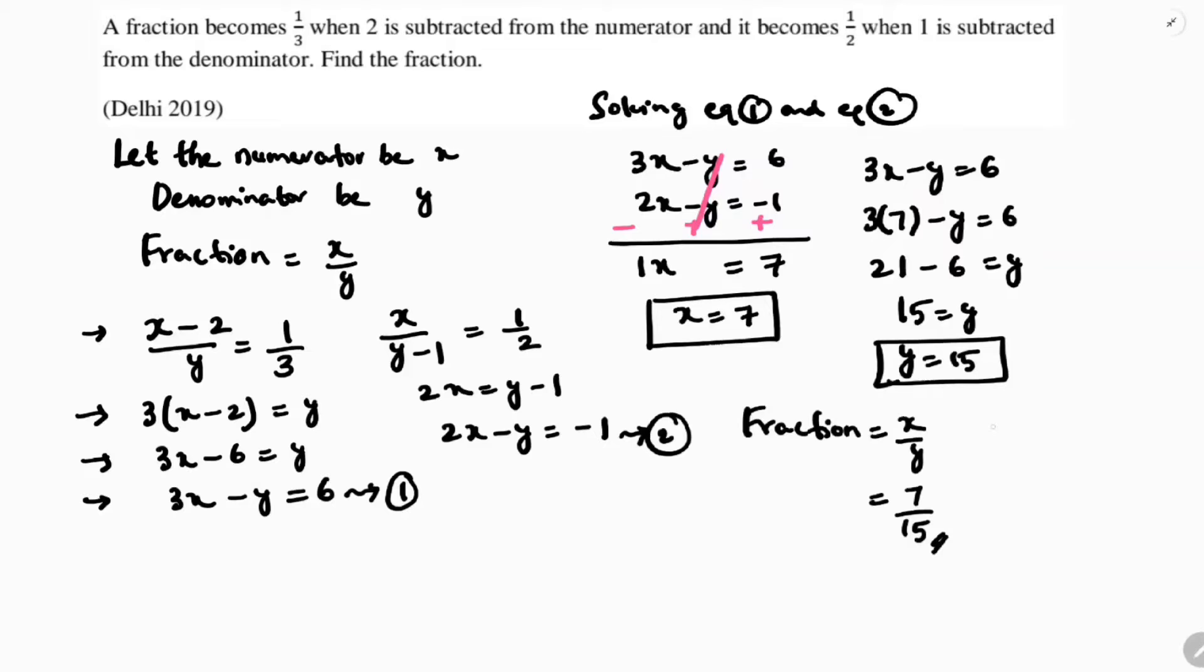For verification, you can check. If 2 is subtracted, 7 minus 2 from numerator, it becomes 1 by 3. So, it is 5 by 15, which is 1 by 3.